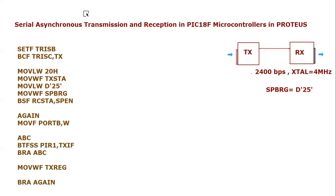I have written the code for transmitter. Let me explain this code line by line. We set up TRISP — we are declaring Port B as input port. Then we use BCF TRISC comma TX pin — the TX pin is present in Port C and we are declaring this pin as an output pin. The next few lines are for the transmission configuration. We move 0x20 into the working register and feed it into the Transmitter Status and Control Register.